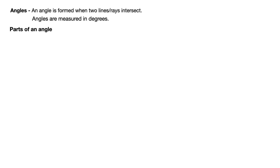First, parts of an angle. An angle is formed when two lines or rays intersect, and the angle is measured in degrees. Within an angle we have points along each ray, and where the two rays actually come together, we have a specific name for that — we call that a vertex. If we have more than one, we're talking vertices. The vertex is the point where they come together.